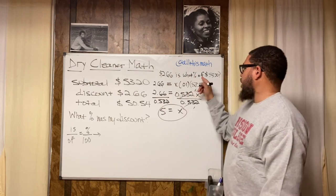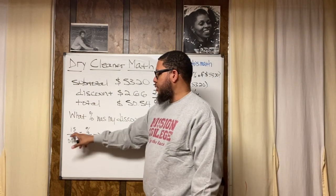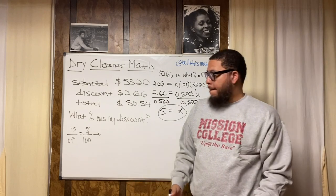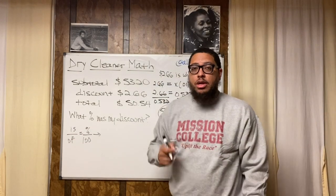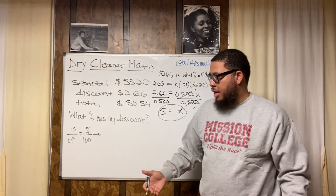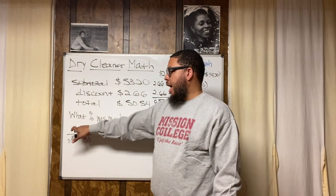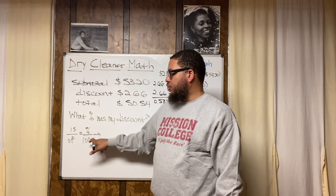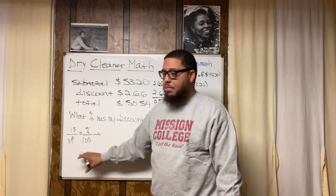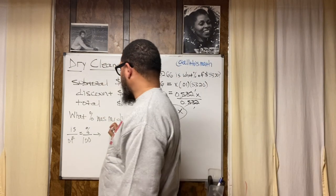Our question is: $2.66 is what percent of $53.20. With this method, I'll have two of the three values — is, of, and percentage — and the unknown is the percentage. My 'is' number is 2.66, and my 'of' number is 53.20. The 100 is always there. So I set up: 2.66 / 53.20 = d / 100, where d represents the discount percentage.